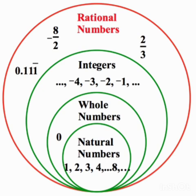It is closed under addition, subtraction, multiplication. But it is not closed under division. There is a definition given that a divided by 0 is not defined. Any Rational Number a divided by 0 — which means if the denominator is 0, we say not defined. That you should keep in your mind.